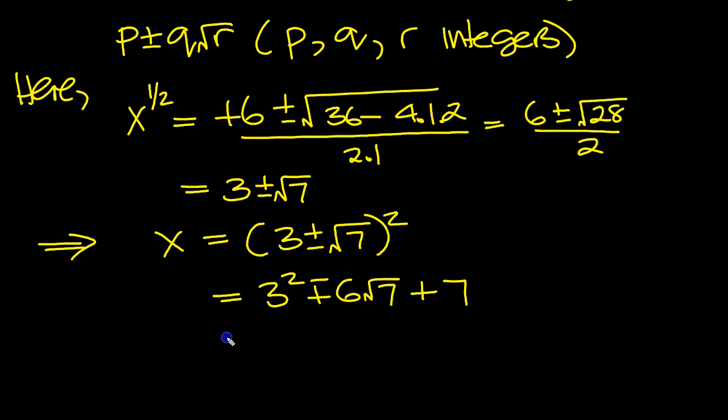So we get equal to 9 plus 7 is 16, plus or minus, which is the way around we customarily write it, 6 the square root of 7.